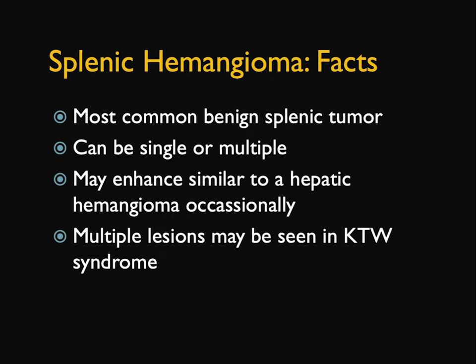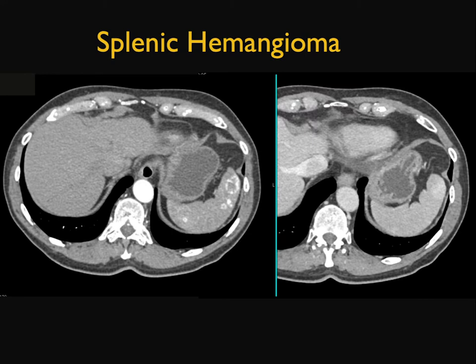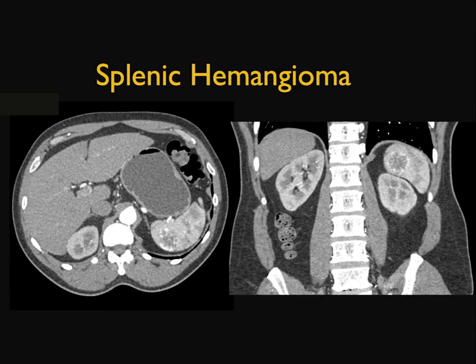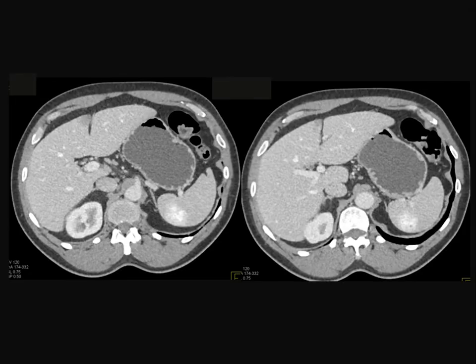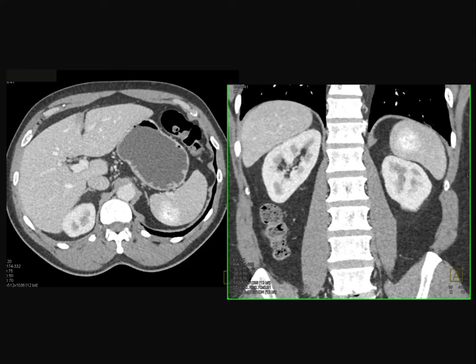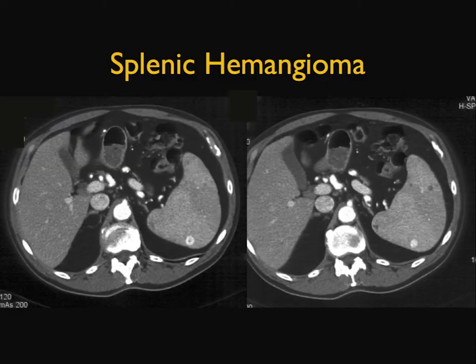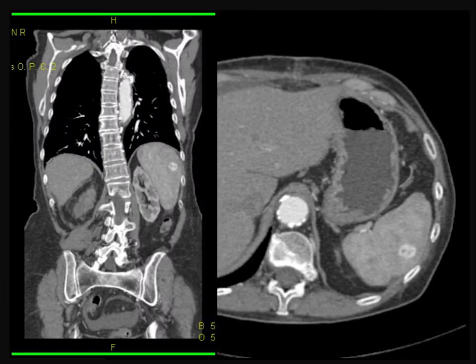Hemangiomas are the most common splenic tumor, and we can see multiple occasionally in a regular patient, but particularly in Klippel-Trenaunay-Weber syndrome. Here are hemangiomas showing multiple peripheral enhancement that fills in over time — very classic for hemangioma. Here's another example: peripheral puddling, and you can see in the next set of images it fills in over time. When you have this appearance, there is nothing really else to think about — it's hemangioma.